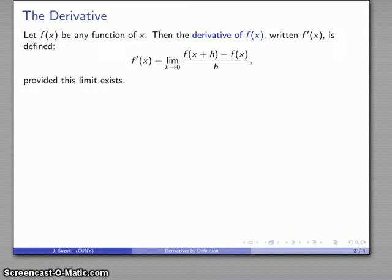Suppose I have any function f(x), then there's this thing that I'm going to call the derivative of f(x). I'm going to write that f prime of x, that little hash mark is read prime, and I'm going to define it in the following way. f prime of x, the derivative of f(x), is going to be defined as the limit as h goes to 0 of f(x + h) minus f(x) over h.